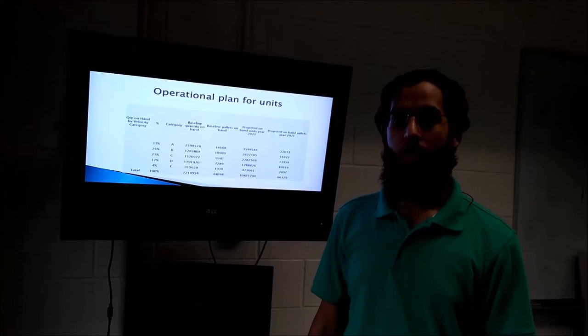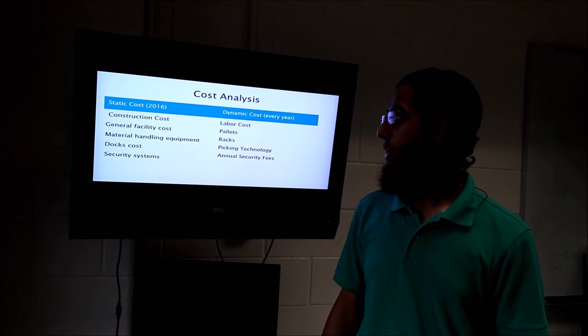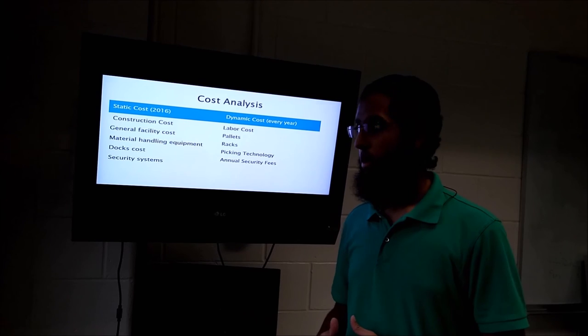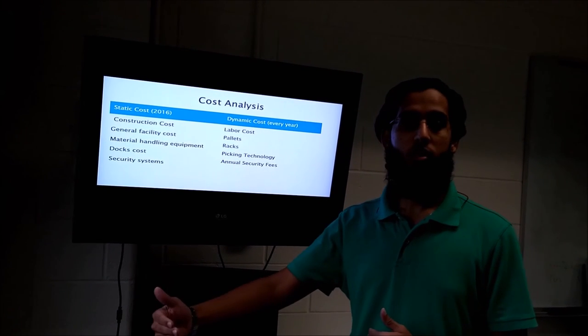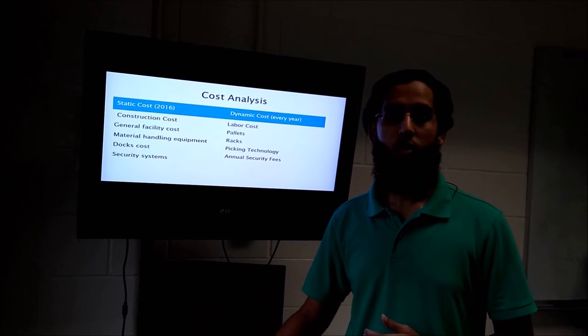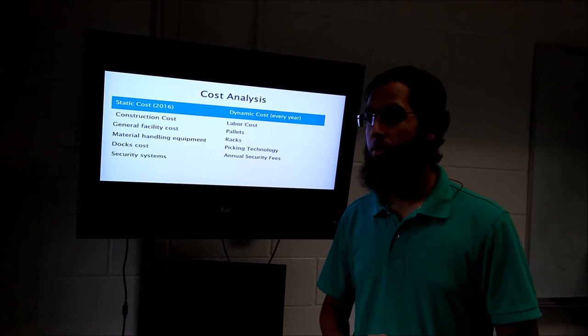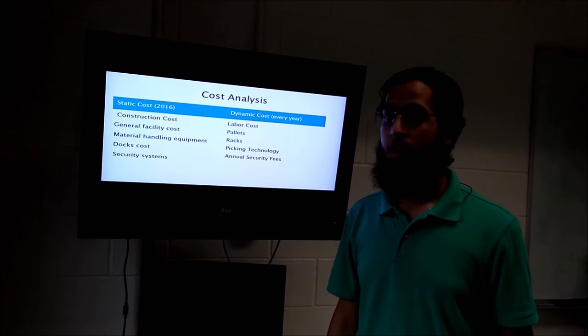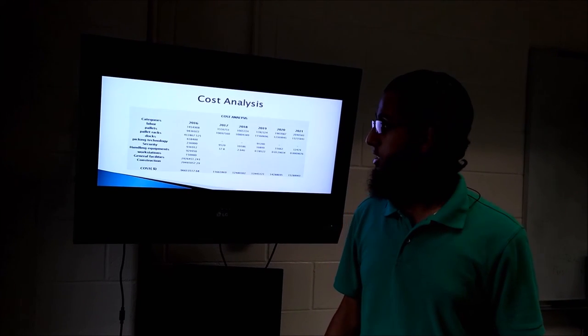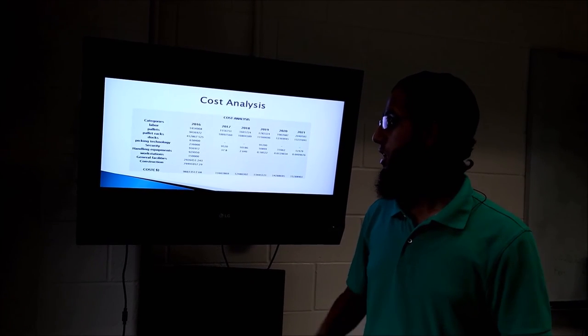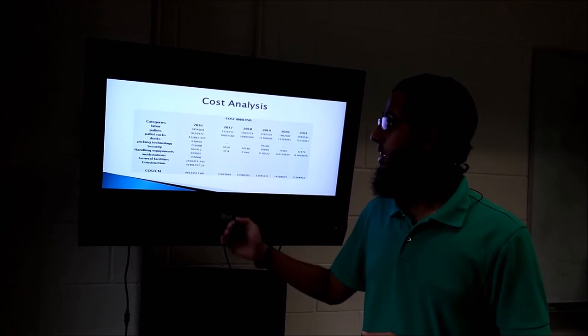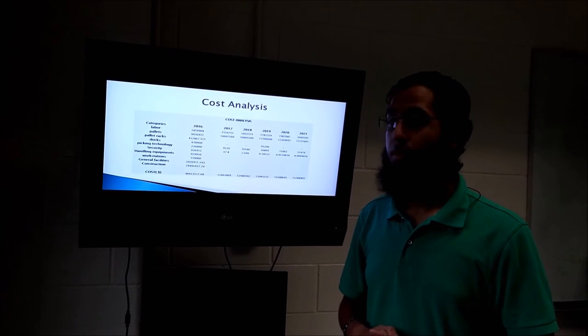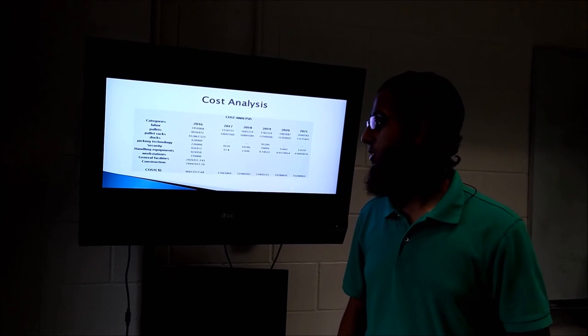We have our cost analysis here where you can see the main costs are in the beginning for our baseline year because they're one-time costs. Then in the ensuing years, we only need to add a little bit more to keep the operation flowing. Our biggest costs are construction and labor. Here you can see a breakdown of our costs. Our total cost is $96.6 million, and labor amounts to $1.45 million of that total.